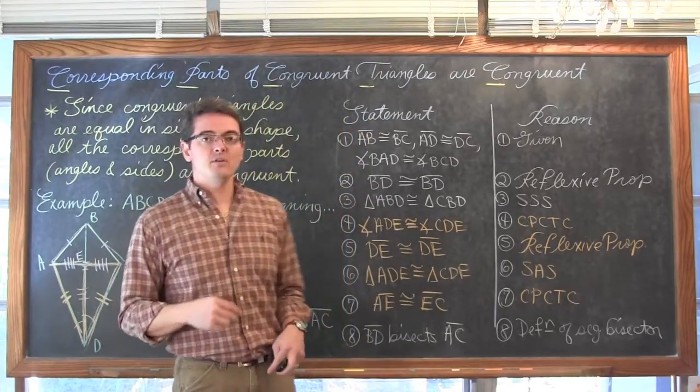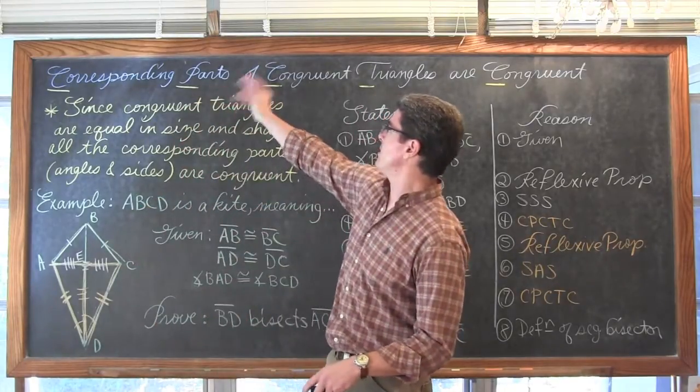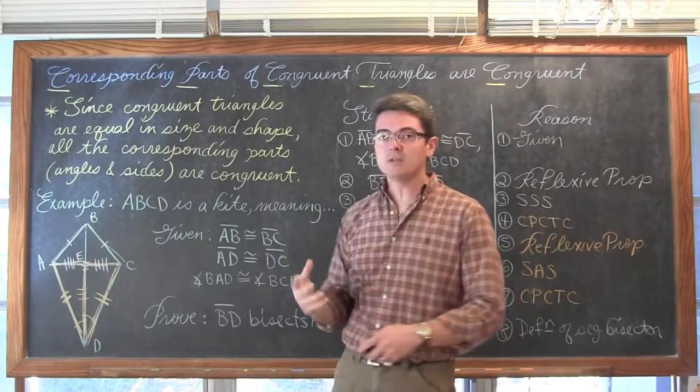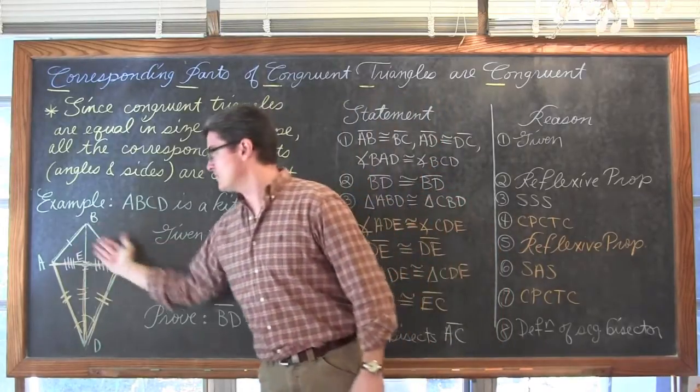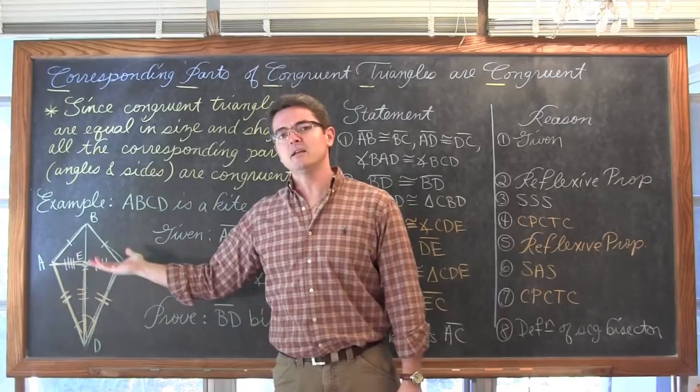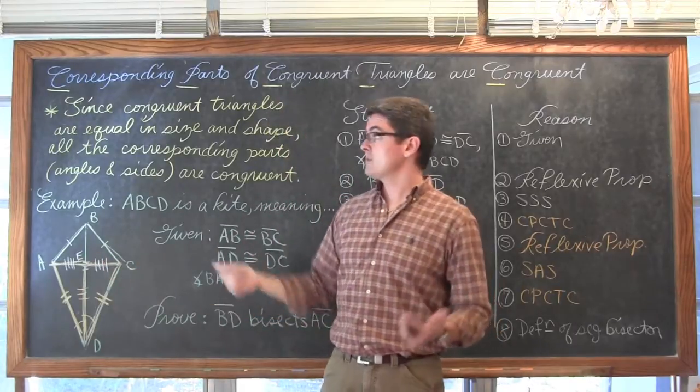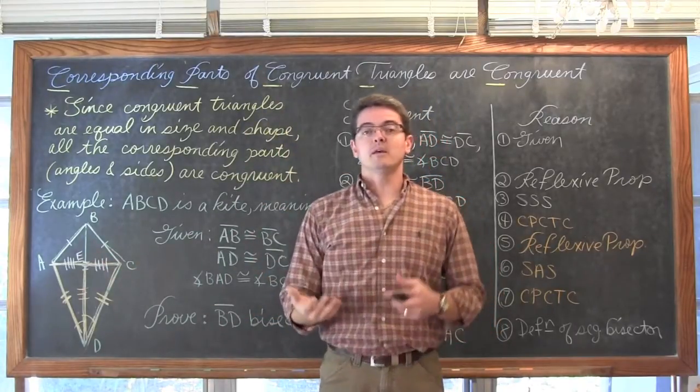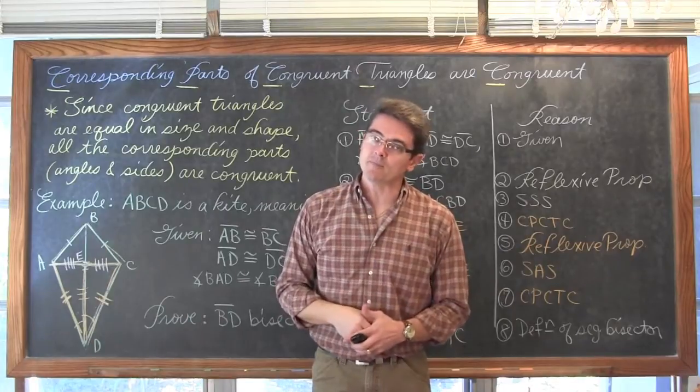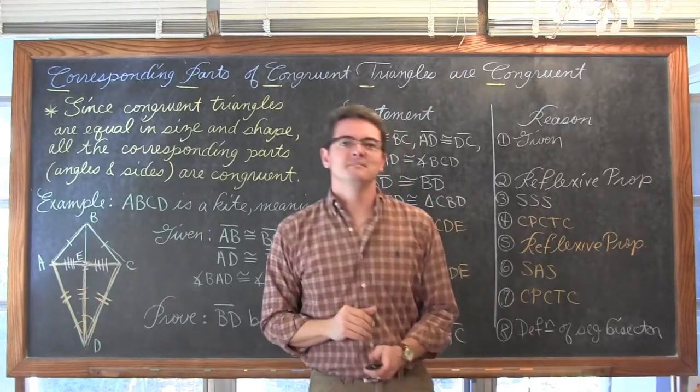So that is two examples of how you can use the corresponding parts of congruent triangles that are congruent. And in this case we have proved a couple of facts about a kite which maybe we did not even study yet. We will obviously be using this theorem later on when we get into our later studies of geometry. I am Mr. Tarrou. Go do your homework!